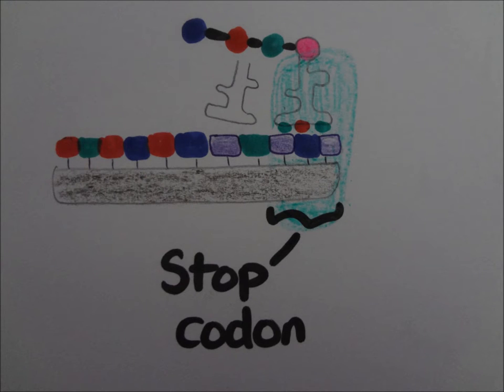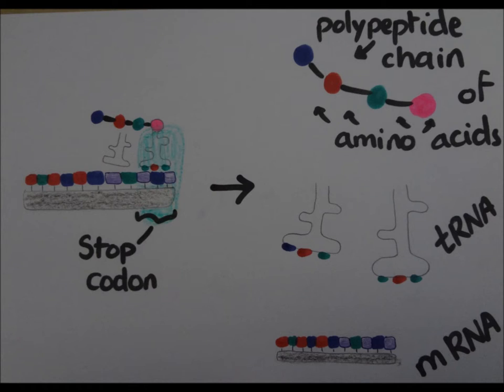As the ribosome reaches the stop codon, the tRNA, mRNA strand and the link of amino acids are separated.